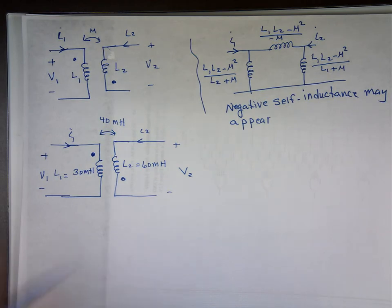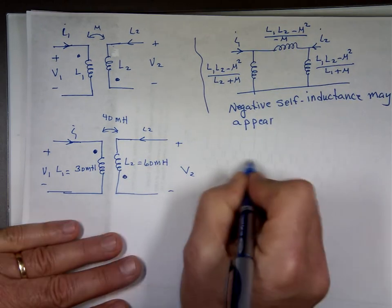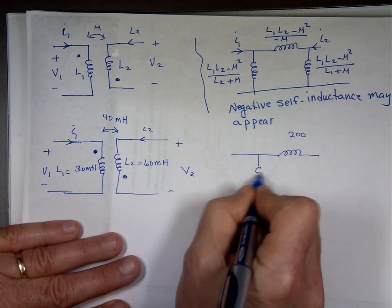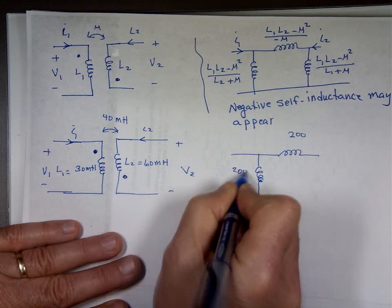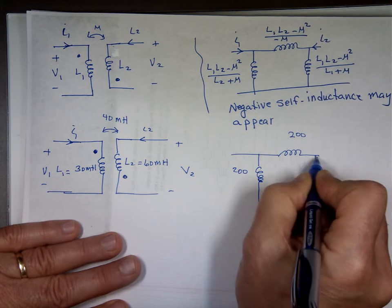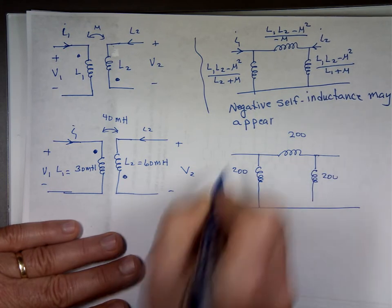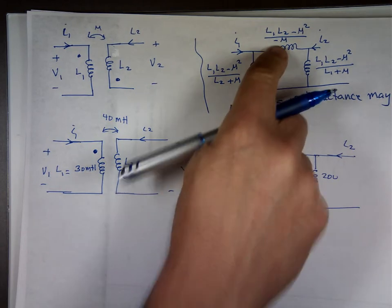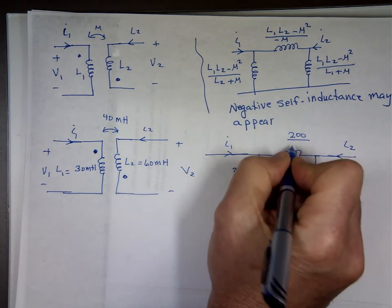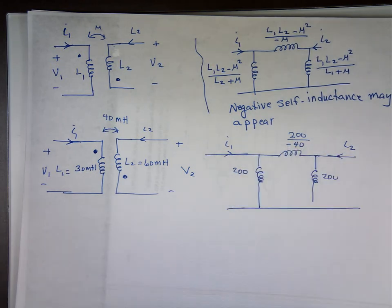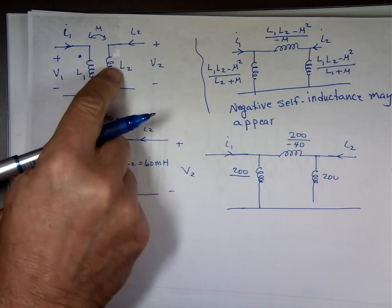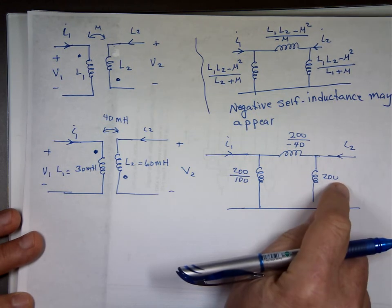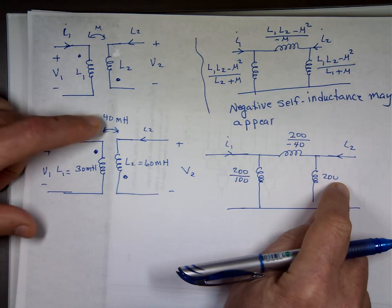So the equivalent of that. We know the top didn't change here. So this will be the top was 200. I'll come back and put the bottom for each one. The top was 200, 200. Now this will be negative M. That's negative 40. This is 200 over 60 plus 40, which is 100. 200 over 30 plus 40, which is 70.